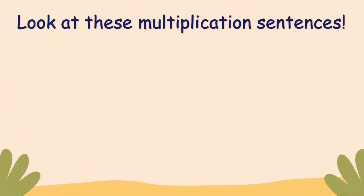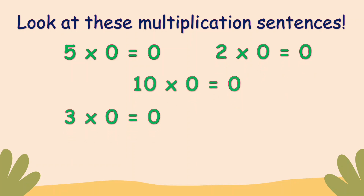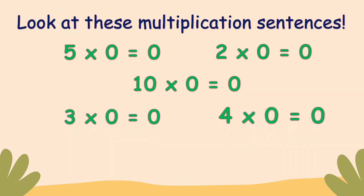Let's look at these multiplication sentences: five times zero equals zero, two times zero equals zero, ten times zero equals zero, three times zero equals zero, and four times zero equals zero. What do you notice? When you multiply a number by zero, the answer is zero.